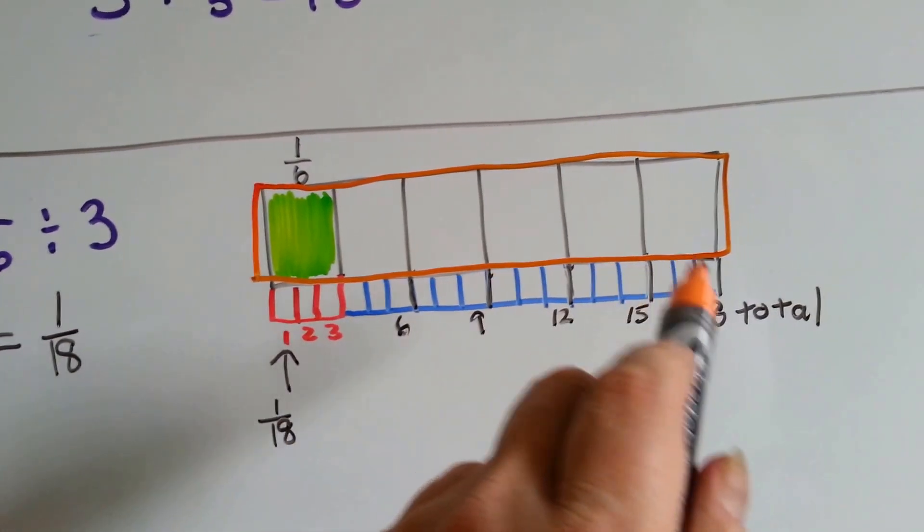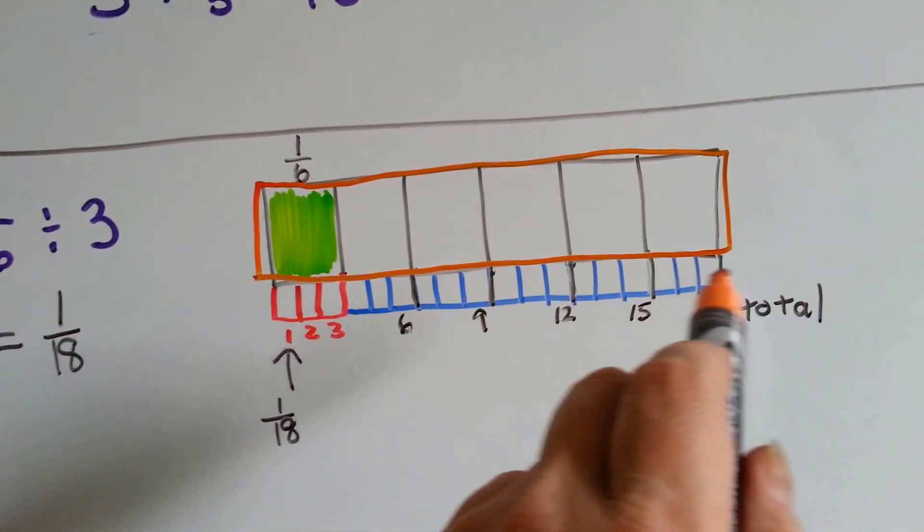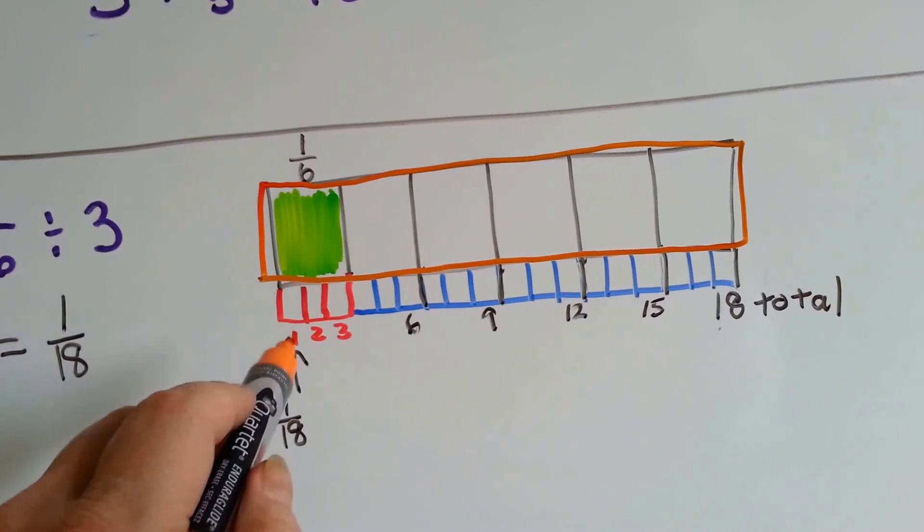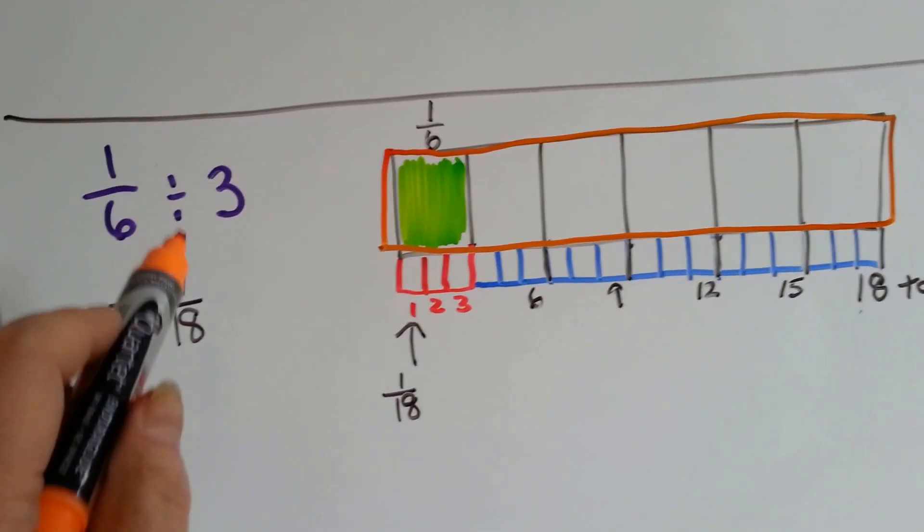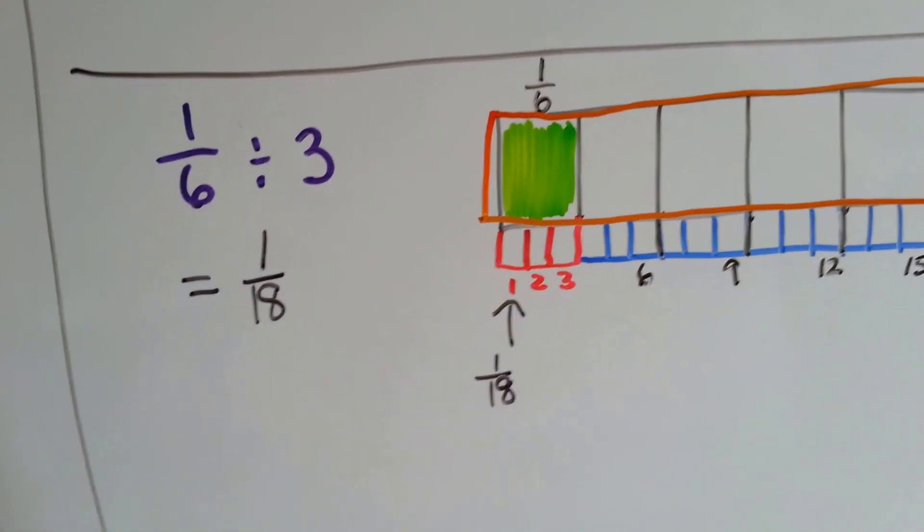Well, if I split them all into 3, I would have 18 little pieces. So one of these would be 1/18. 1/6 divided by 3 is 1/18.